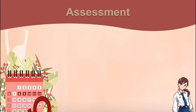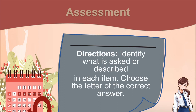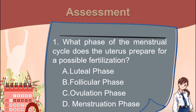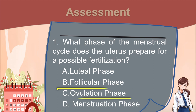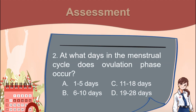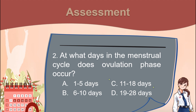Now let's have the assessment. Directions: Identify what is asked or described in each item. Choose the letter of the correct answer. Number 1. What phase of the menstrual cycle does the uterus prepare for a possible fertilization? Number 2. At what days in the menstrual cycle does the ovulation phase occur? A. 1–5 days. B. 6–10 days. C. 11–18 days. D. 19–28 days.